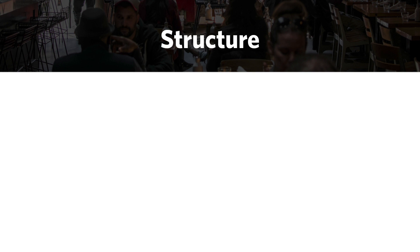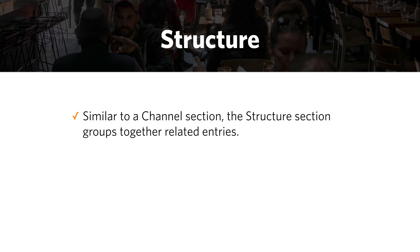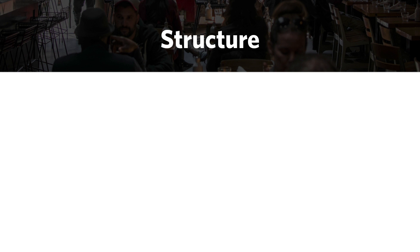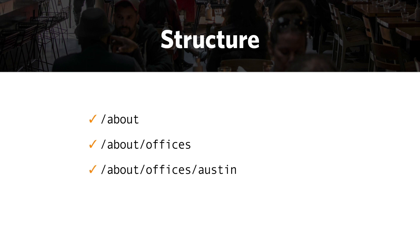The next one is called a structure. This section type is similar to a channel section in that it's a collection of entries. However, the structure section groups them with a relationship and a hierarchy, which is also reflected in the URLs. For example, if I have /about for an entry, then /about/offices, and then /about/offices/austin, using a structure section I could create this hierarchy in the URL, and that will also be represented when managing content inside the Craft control panel. We'll build a structure section as part of this course.